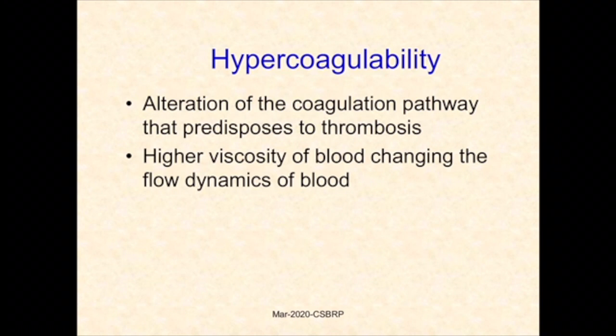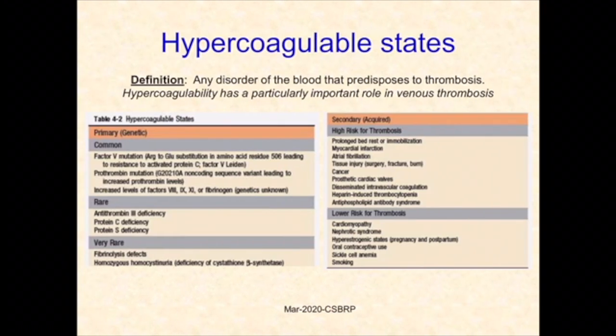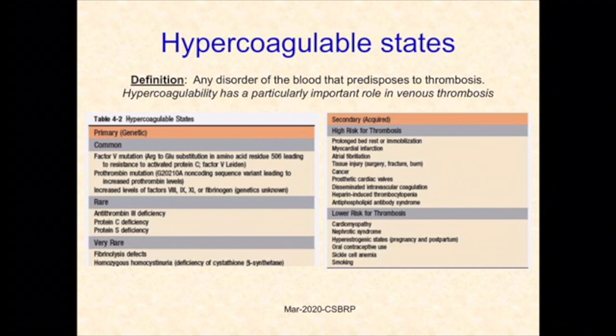The third component of Virchow's triad is hypercoagulability, which may predispose to thrombus formation by altering the coagulation pathway or increasing blood viscosity and changing fluid dynamics. Primary hypercoagulable states are associated with genetic abnormalities including factor V mutation, prothrombin mutation, increased levels of factors 8, 9, 11, and fibrinogen. Rare genetic causes include antithrombin 3 deficiency and protein C and protein S deficiency.